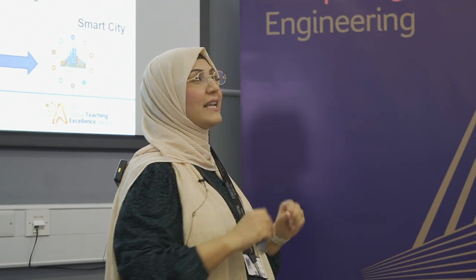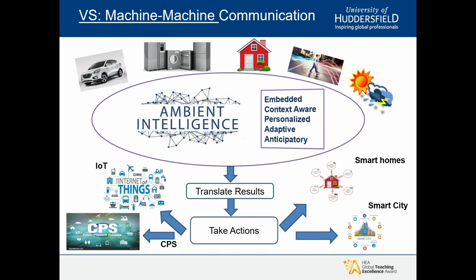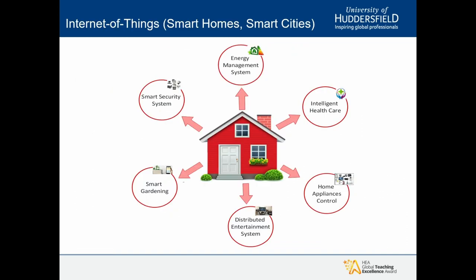After human-to-human communication, the next thing is machine-to-machine communication — and this is where the fun part is. Machines are talking with each other without human intervention, thanks to artificial intelligence, ambient intelligence, and context-aware analysis. Examples of machine-to-machine communication include smart homes and smart cities — smart gardening, smart healthcare systems, smart appliances. We have made the automation of our houses possible through the way devices communicate with each other, understanding what is happening in the house so they can take the right decisions.